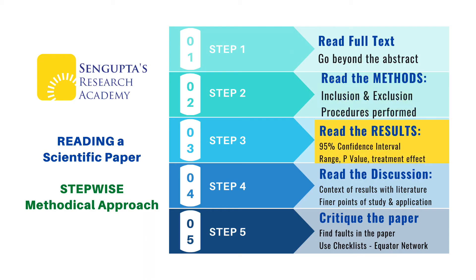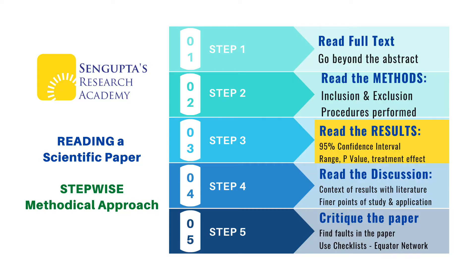Step three: read the results section very carefully. A well-written paper should describe the primary outcome measure at the beginning of the results section. While looking at the numbers, concentrate on the 95% confidence intervals or the range given along with the mean and standard deviation. These intervals and ranges give us the entire spectrum of possibility of the results. For example, if a HbA1c is reduced by 2% by a new drug and the 95% confidence interval varies from 1.2 to 4%, that means 95% of people will experience a drop in HbA1c ranging between 1.2 and 4%.